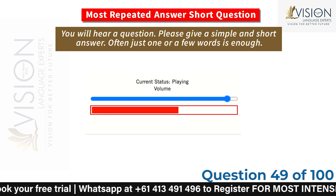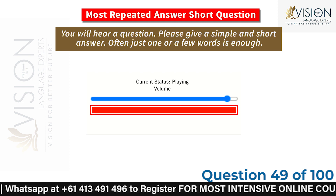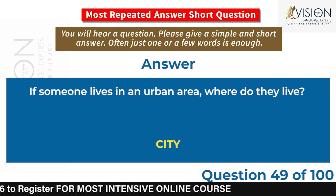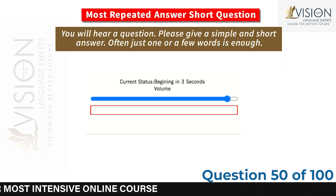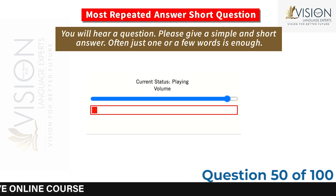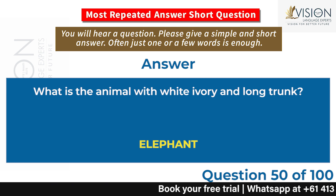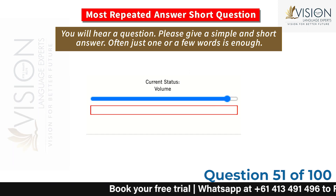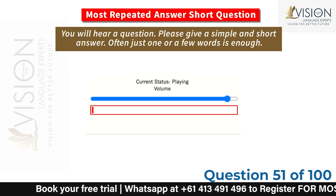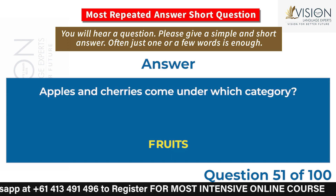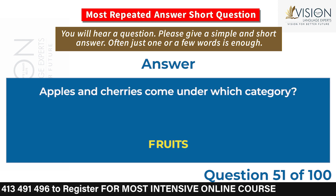If someone lives in an urban area, where do they live? City. What is the animal with white ivory and a long trunk? Elephant. Apples and cherries come under which category? Fruits.